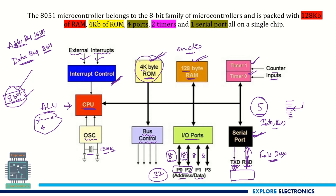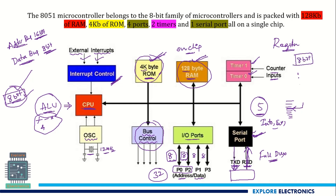To summarize: there is 4KB on-chip ROM for storing program instructions, 128 bytes of RAM for data, a bus controller managing a 16-bit address bus and an 8-bit data bus, and the ALU/CPU capable of handling 8-bit data at a time. There are also registers — some are 8-bit for storing data, and some are 16-bit for storing addresses.